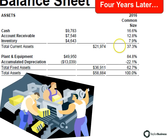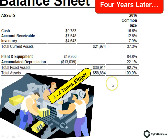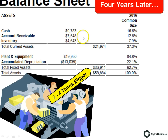Looking four years later at what this company purchased — they quintupled their debt, and their plant and equipment is a lot larger. Their fixed assets are about three to four times larger than they started with in round zero. Their cash, inventory, and accounts receivable have gone up a little bit, but not dramatically. What they're doing is taking capital and investing it into plant and equipment, not necessarily into current assets — they're building wealth-generating assets, and that's a good thing.